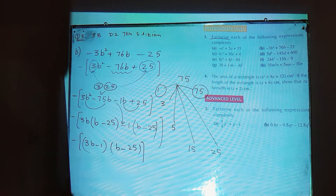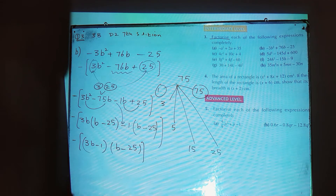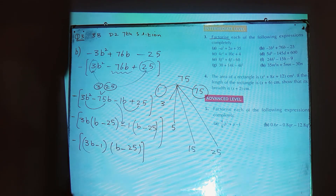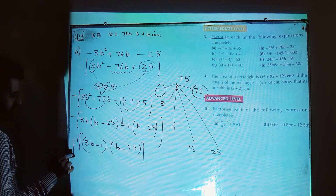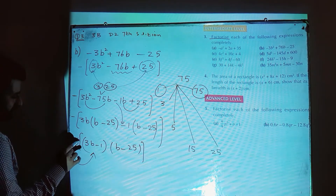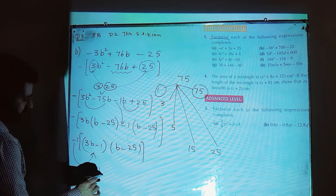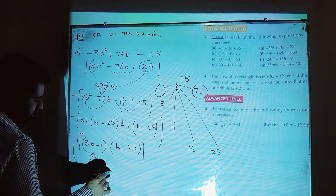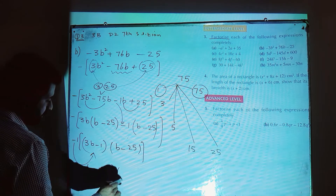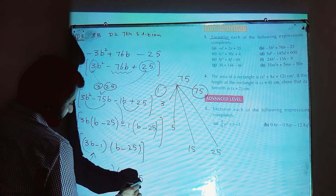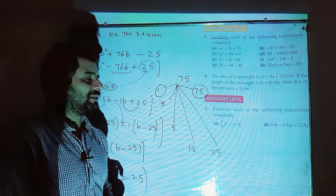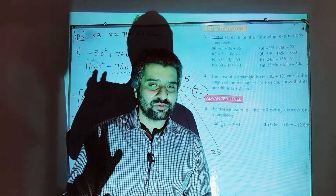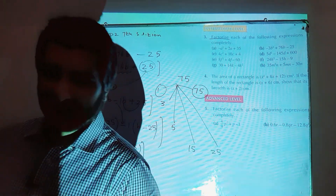We still have the negative sign outside, so multiplying through gives the final answer for part b: (minus 3b plus 1)(b minus 25). The rest of the parts will be solved in my next lesson. Thank you so much.